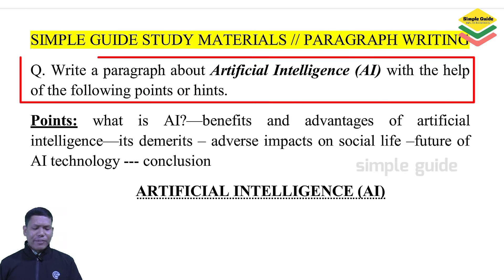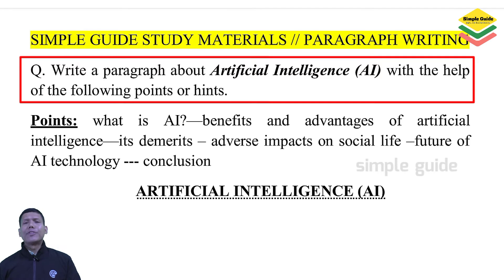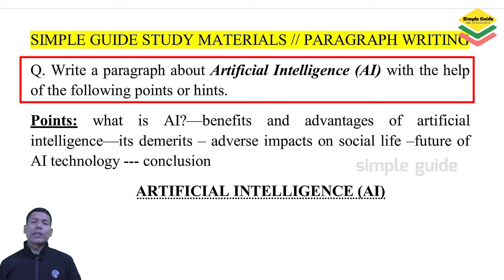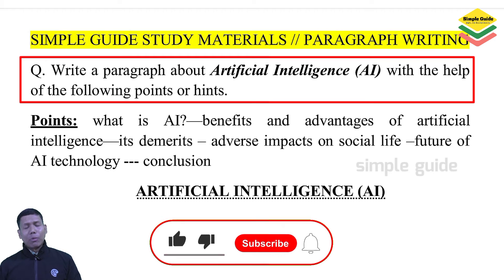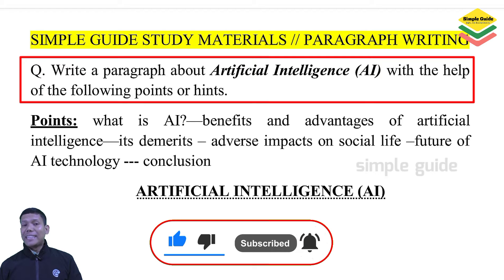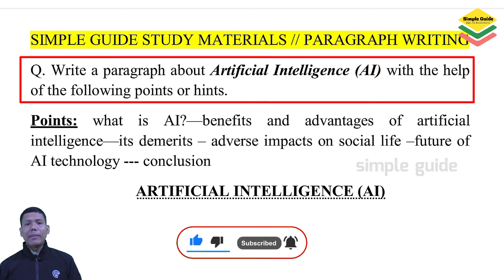Write a paragraph about Artificial Intelligence and AI with the help of the following points and hints. You have to write the points and hints, and write a paragraph about Artificial Intelligence and AI. You will understand this on your mobile, computer, or laptop. You are automatically aware of what Artificial Intelligence is — it is a key to AI.